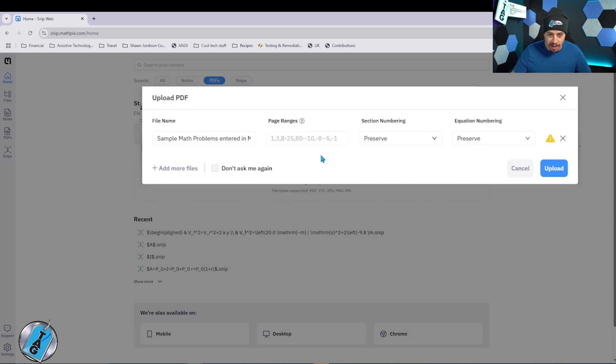Now we have file name, we have page ranges, we can choose the section numbers, equation numbering. I think in this example, we'll remove the equation numbering and let's select upload.